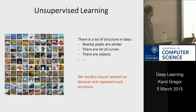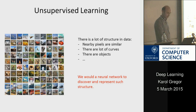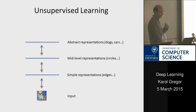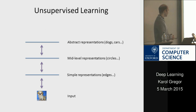One of our goals is to understand data. There is a lot of structure in data. For example, in images, you notice that nearby pixels are similar. There are curves, and there are objects. You would like a neural network to discover such structure — that's one of the big goals of deep learning. The brain is a deep network: at lower levels you have simpler representations like edges, and as you go higher, you get more abstract representations. We would like to build a network that could do that.